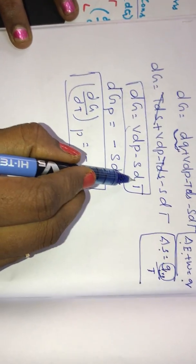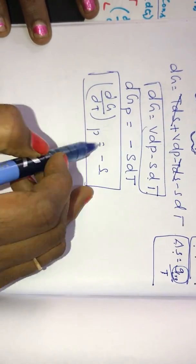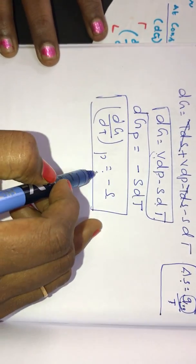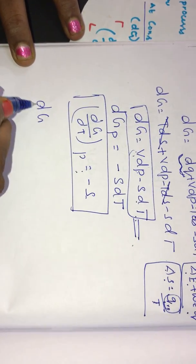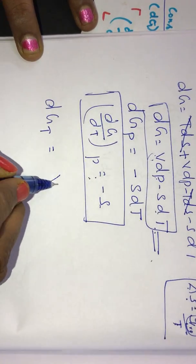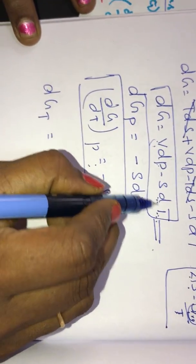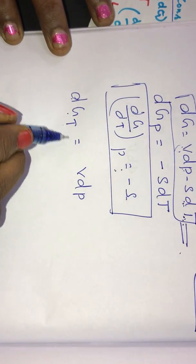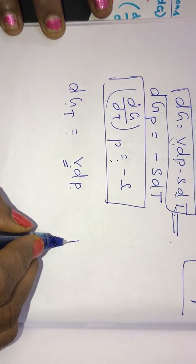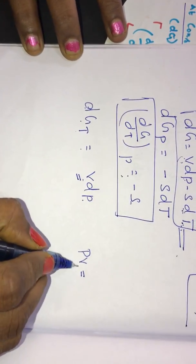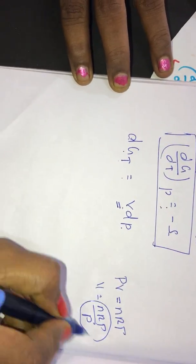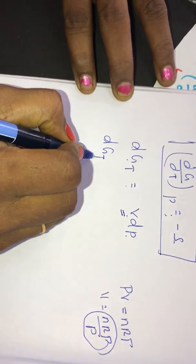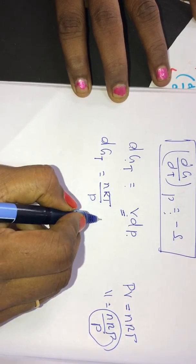Next, consider what this expression becomes at constant temperature. We have seen what happens at constant pressure; now at constant temperature, dT is equal to zero, so dG at constant temperature equals V dP. In place of V, we substitute from the ideal gas equation PV equals NRT, giving V equal to NRT divided by P. So dG at constant temperature equals NRT divided by P, times dP.